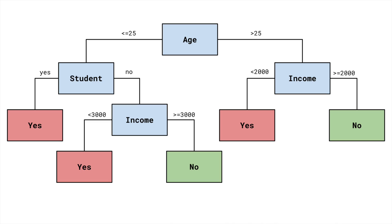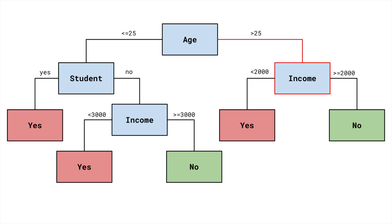The first approach is to build models that are intrinsically interpretable. These are simple models that can be understood by a human without the need for additional methods — we only need to look at the model's parameters or a model summary. A decision tree is a good example. Take this one, trained to predict whether someone would default on a car loan. Suppose we want to understand why we gave a loan to a 29-year-old student with a $3,000 monthly income. The person is over 25, so we go right at the first node. She has an income greater than $2,000, so we go right again and arrive at a no-default leaf node.